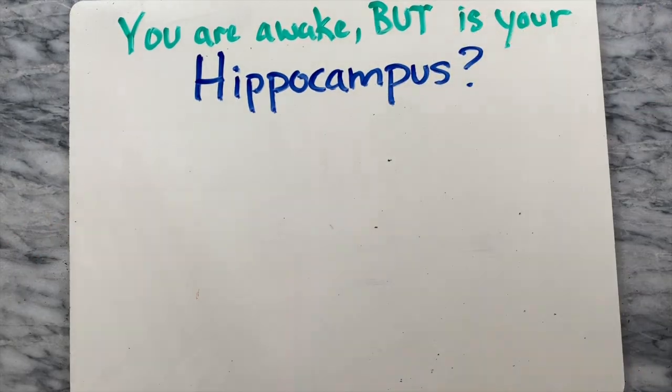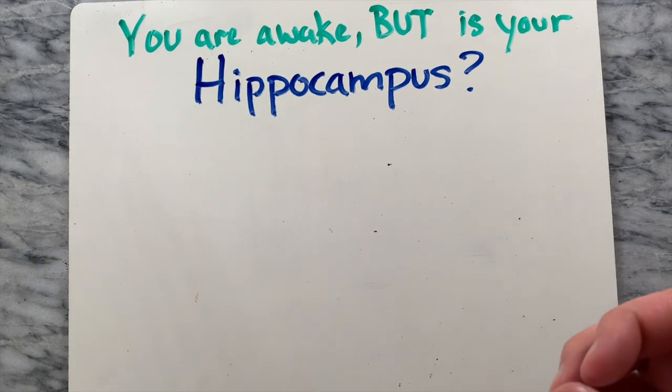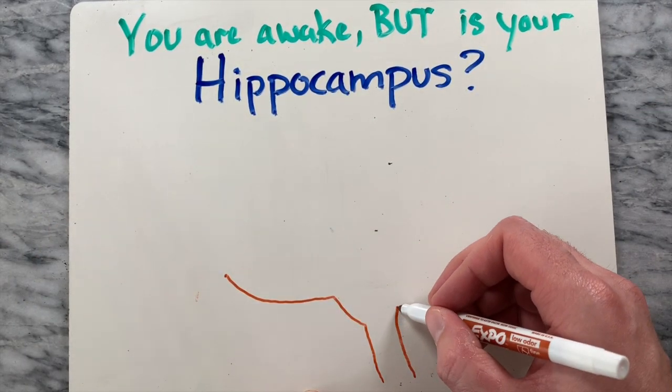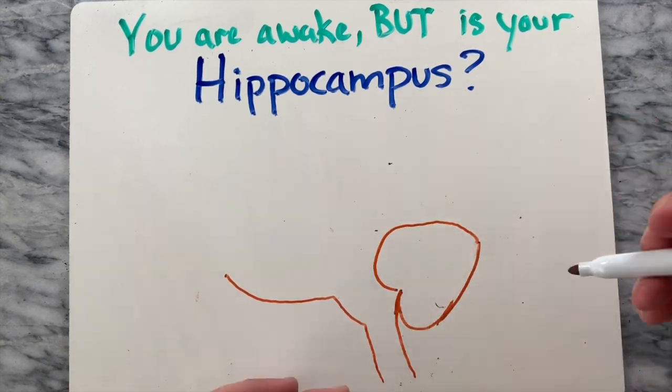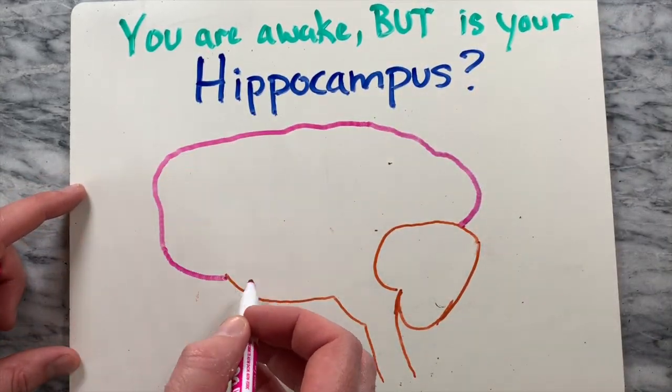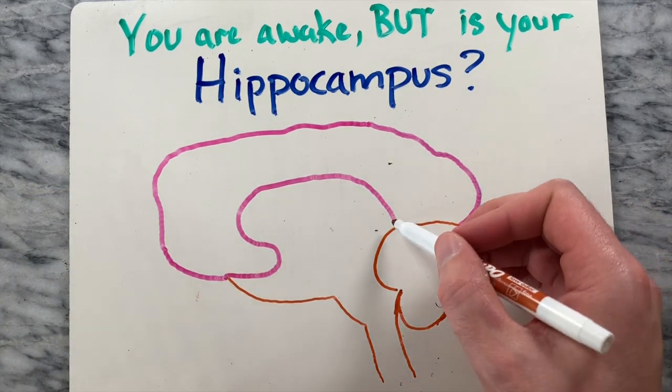When we fall asleep not all of the brain's regions go offline at the same time, according to studies. Let's take a moment to look at one of the hemispheres of the brain. The hippocampus is a small curved structure that sits inside the brain.